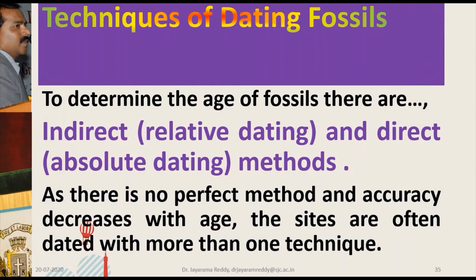Now coming to the techniques of studying fossils, there are two types of techniques. The indirect method is relative dating, and the direct method is called absolute dating. For studying the age of the fossil, any one method is sometimes not enough — sometimes they use more than one technique to study the fossil and to determine the age of the fossil.